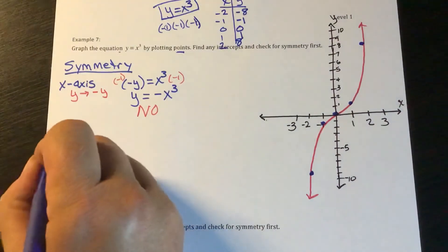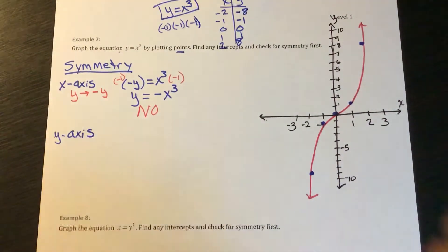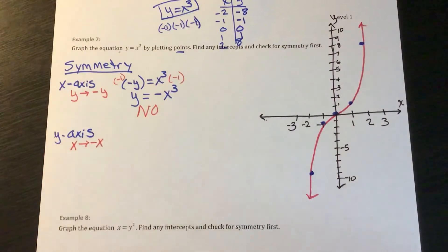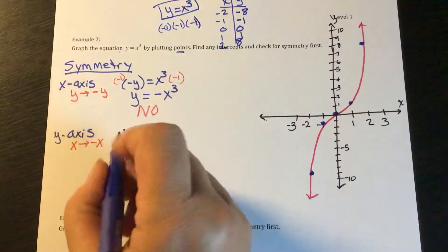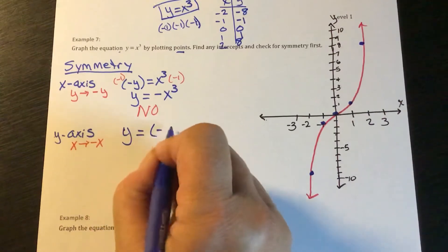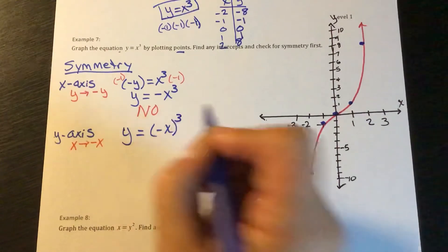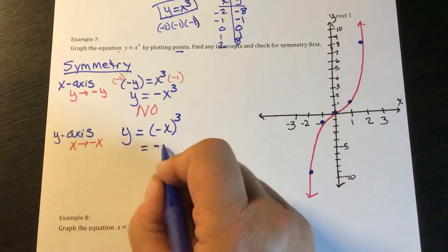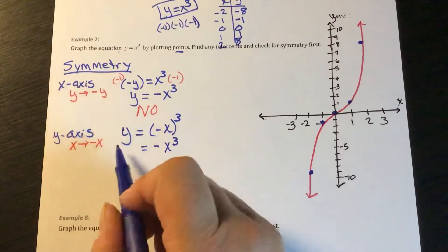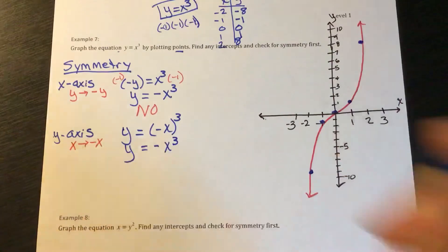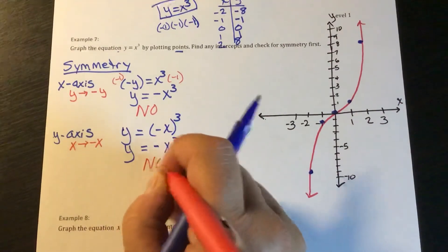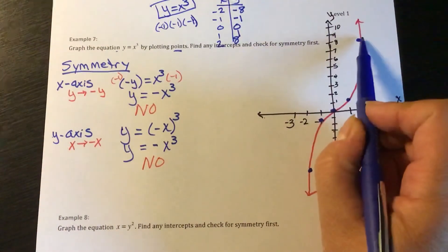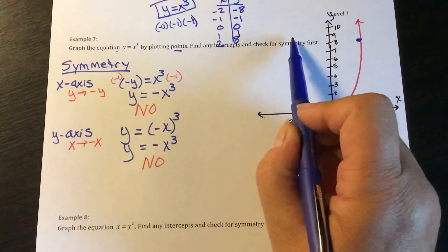How about the y-axis? This time we're going to take x and replace it with negative x. So in my equation, y equals — I'm going to change x to negative x and cube it. If I cube a negative, this is just going to be negative x cubed, which is not the same as the original. So I don't have symmetry about the y-axis. And we can also see that this point does not have a reflected point over the y-axis.